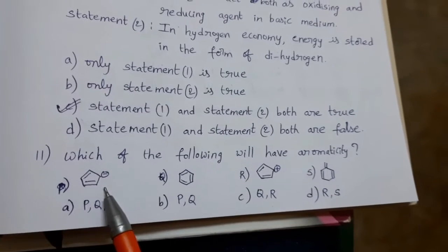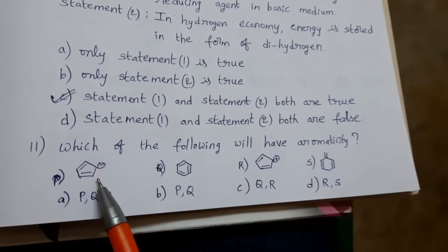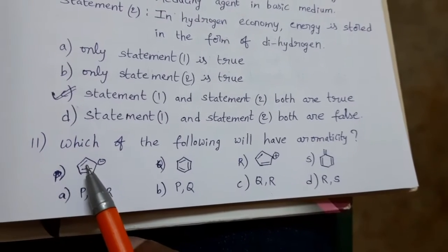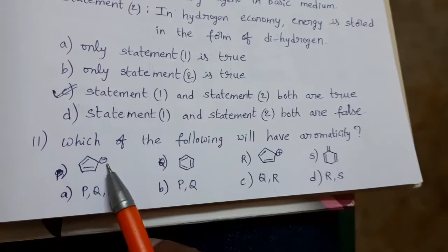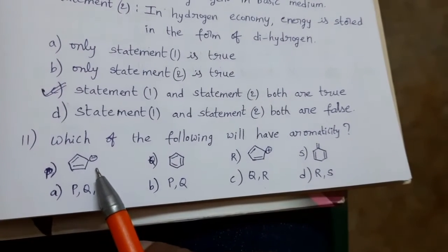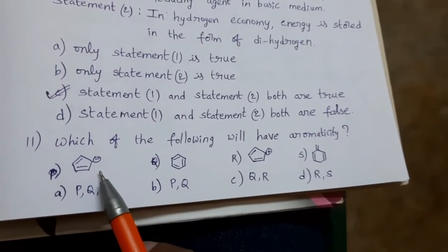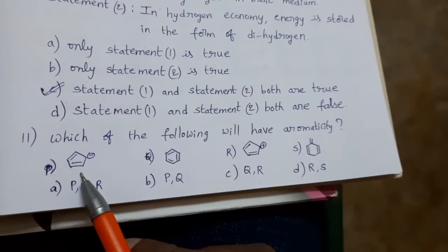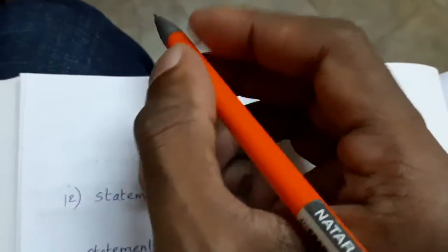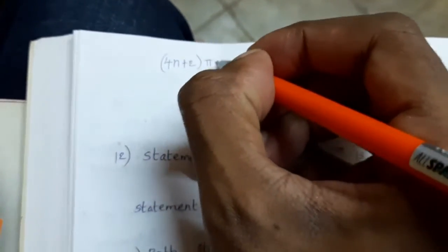Cyclopentadiene anion. This is an aromatic species, because in this, 6 pi electrons are there. Here, 2 pi electrons, 2 pi electrons. This negative charge can also participate in the delocalization. That's why it can follow 4n plus 2 rule. This is Huckel rule. 4n plus 2 pi electrons.